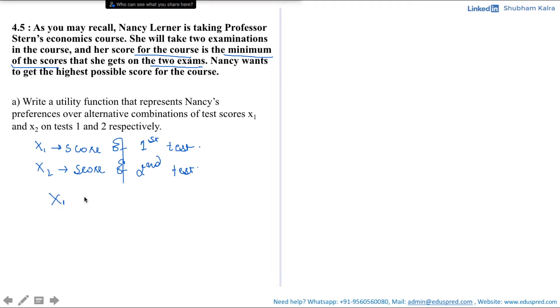That means, if X1, the score on first test, is less than X2, the score on second test, then the professor would be considering the score on the first test. Or, if X2 is less than X1, that is the score on second test is less than the score on first test, then the professor would be considering the score of second test as it is the lower or the minimum of the two.